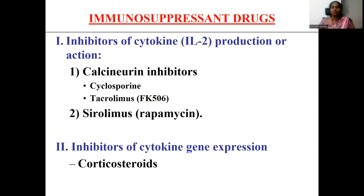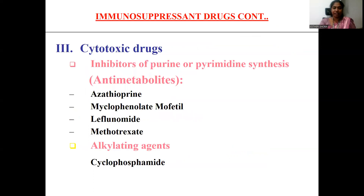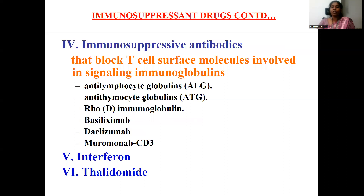The classification of immunosuppressant drugs includes around six different categories: drugs which inhibit cytokine production, drugs which inhibit cytokine gene expression, inhibitors of purine and pyrimidine synthesis, drugs which block T-surface molecules involved in signaling, immunoglobulins, interferons, and thalidomides as the sixth class.